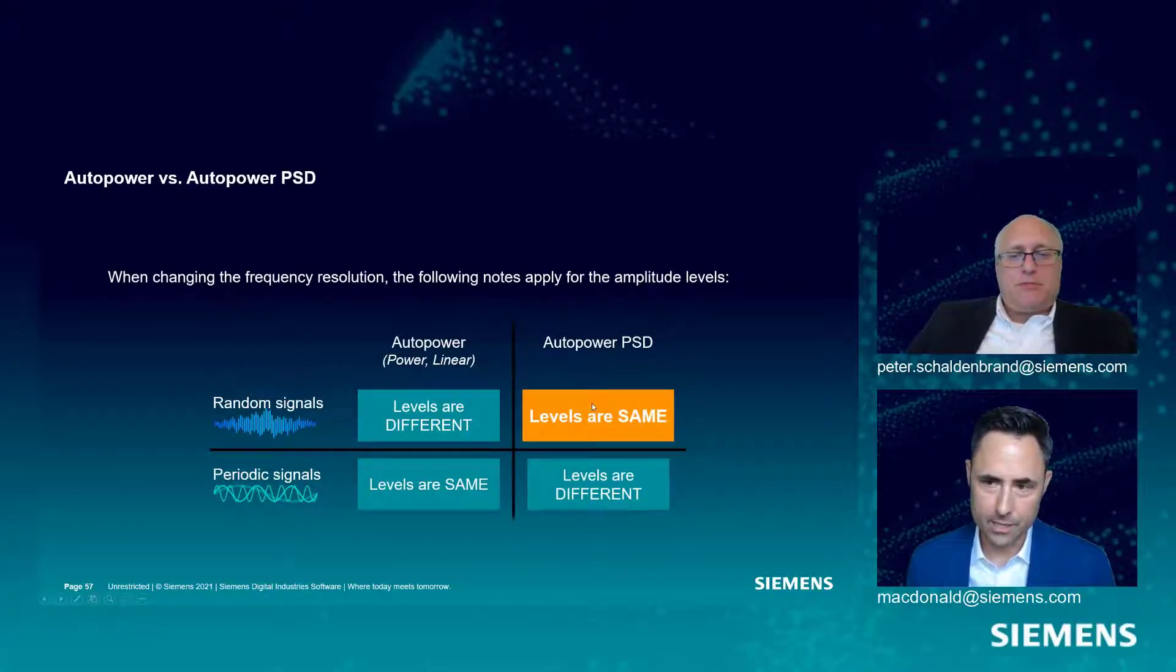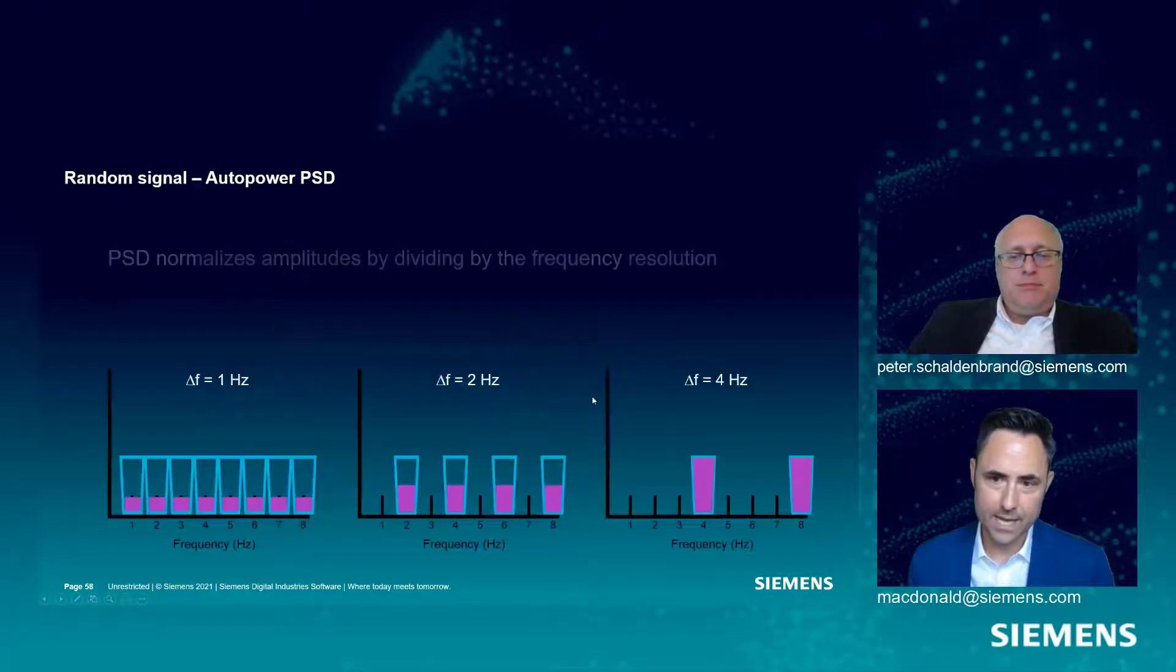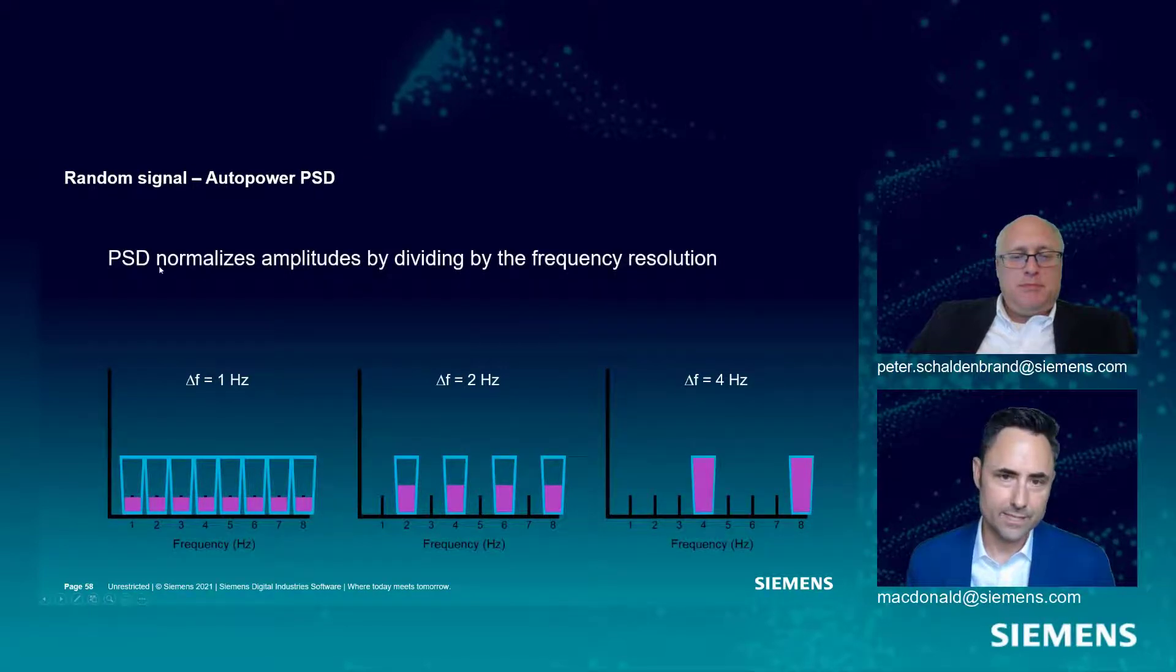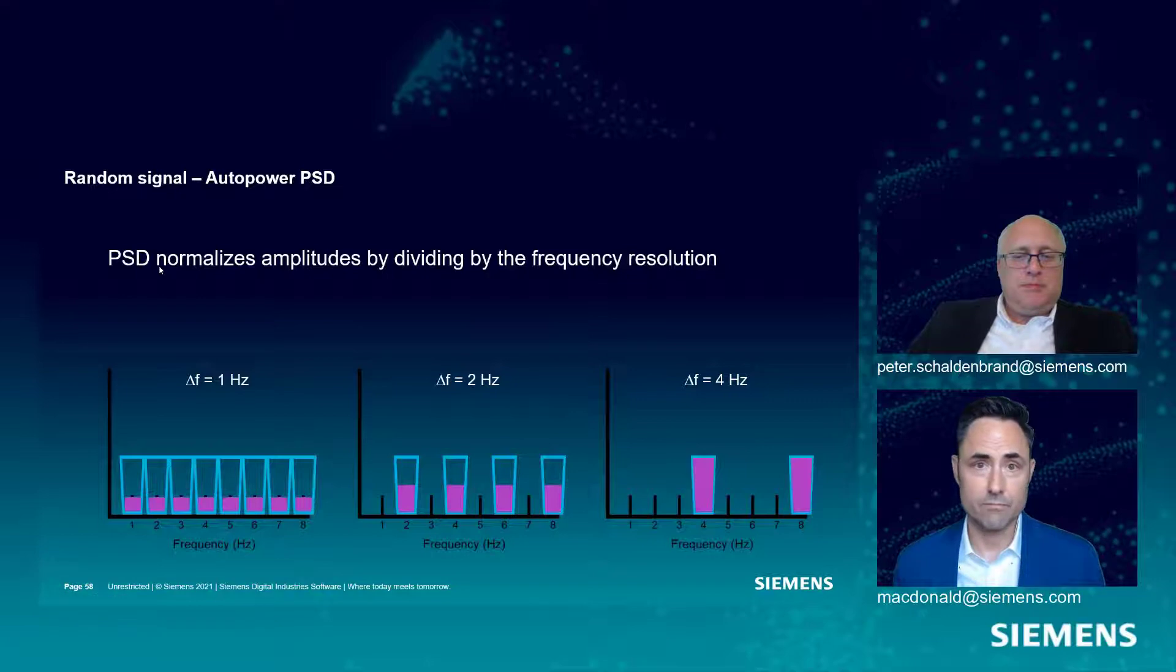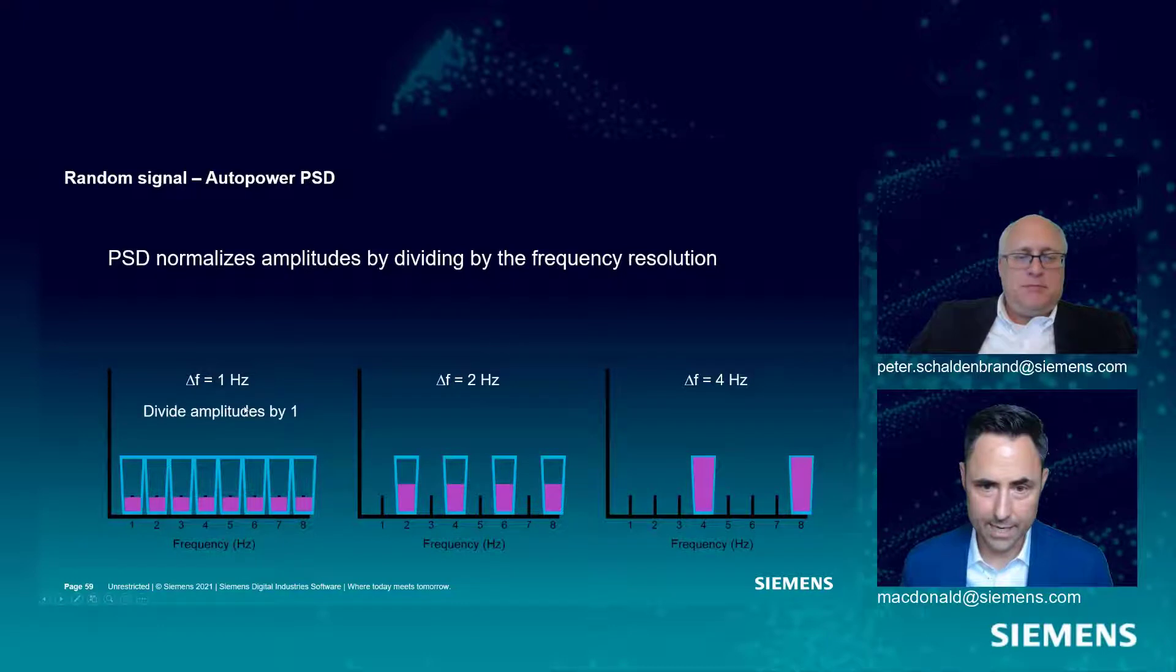We're going to take a look now if we did a PSD in these cases instead. Remember, the PSD takes the auto power and it divides it by the frequency resolution. That's what the PSD is. In each of these cases, we're going to divide the amplitudes by one. Here, we're going to divide the amplitudes by two.